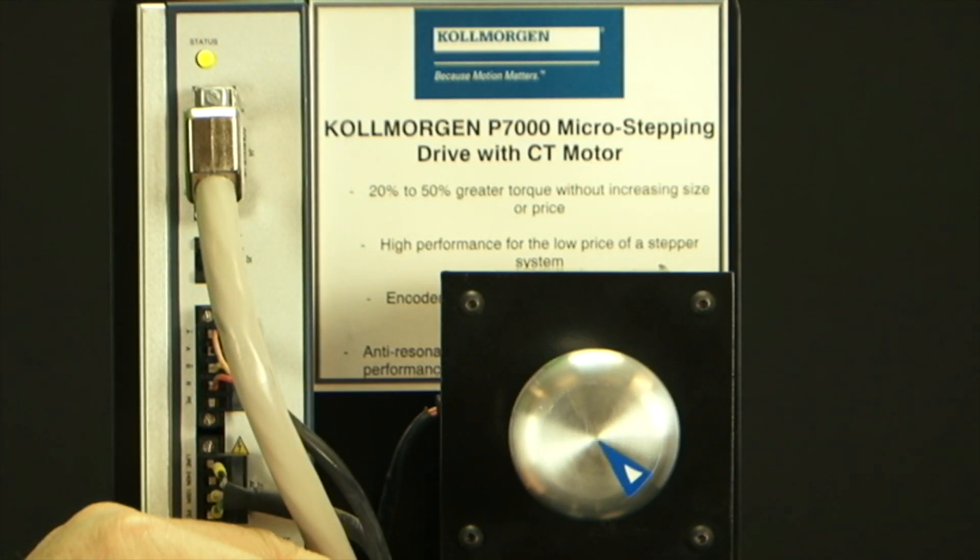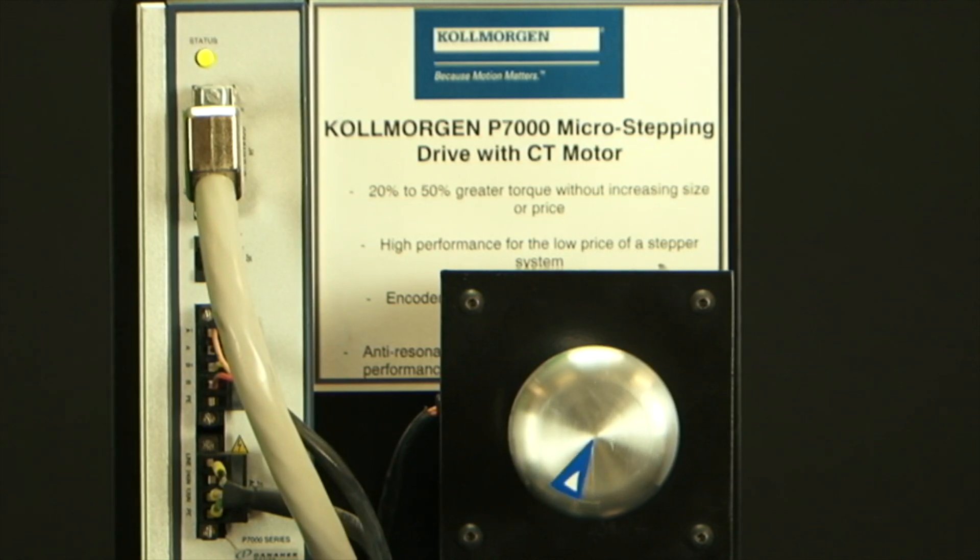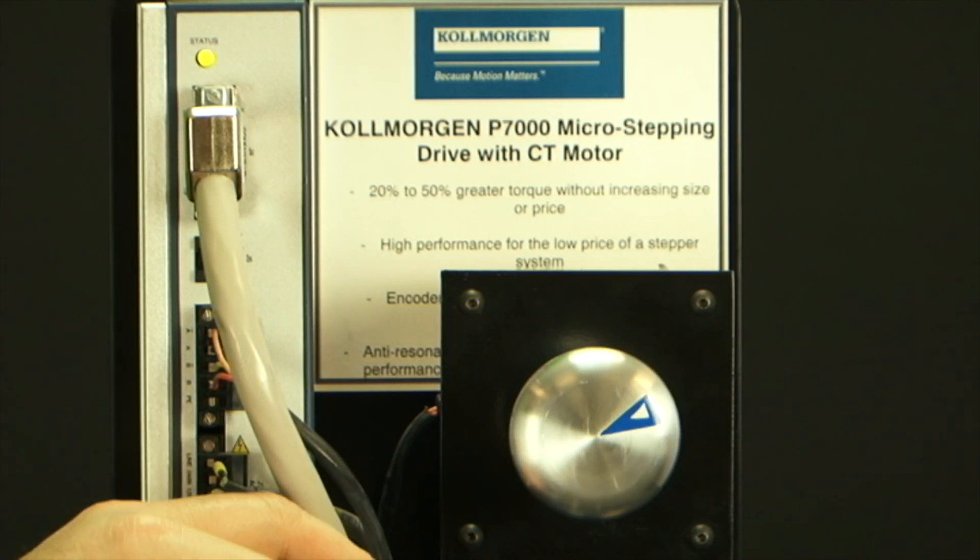When a step motor is making full steps, each step will be a full step angle. For a step motor with 200 steps per revolution, each full step will be 1.8 degrees. At slow speed, the discrete motion of a step motor is not very smooth and each step can be clearly seen and heard.